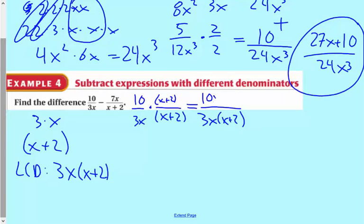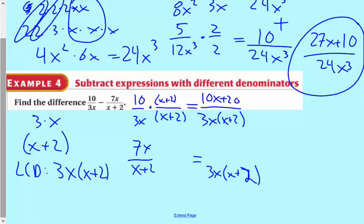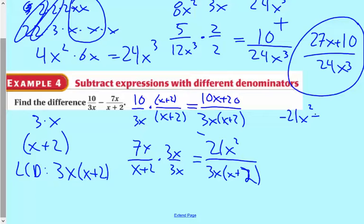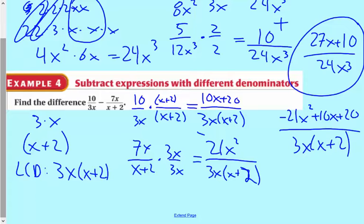On the top I'm going to distribute it: 10x plus 20. On the bottom, I want to leave it in factored form. Then we're going to do 7x over x plus 2 and convert that so it has the LCD. This one is missing a 3x, so I'm going to multiply it by 3x over 3x, giving 21x squared on the top. If we subtract, we have 10x plus 20 minus 21x squared — negative 21x squared first, then 10x plus 20 — all over 3x times x plus 2. These are complicated problems; they're a little more difficult.